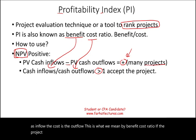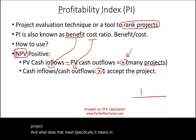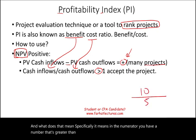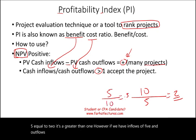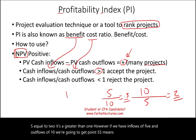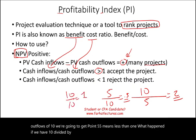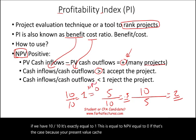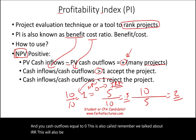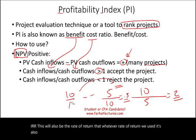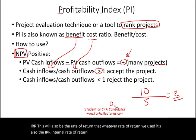If the project has a ratio greater than one, we accept it — meaning the numerator is greater than the denominator. For example, 10 divided by 5 equals 2, which is greater than 1. However, if inflows are 5 and outflows are 10, we get 0.5, which is less than 1. If both are equal — say 10 divided by 10 — the ratio equals 1, which corresponds to an NPV of zero, and the discount rate used is also the IRR, the internal rate of return.